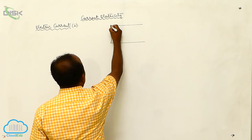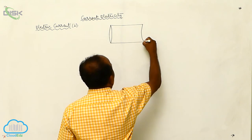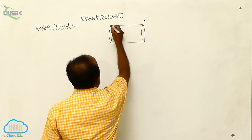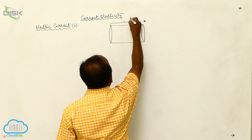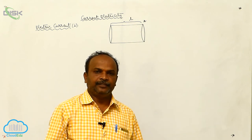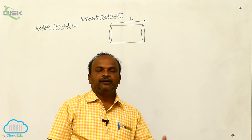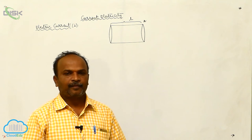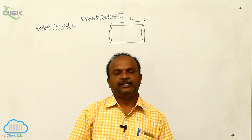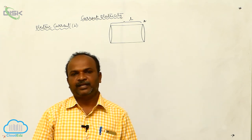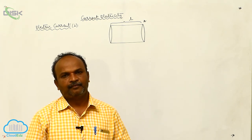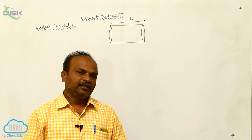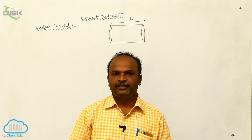Now let us consider a conductor of cross-sectional area A and length L. According to the passage of current, all solids are divided into three categories: conductors, insulators, and semiconductors. The substance which allows the passage of current is called a conductor. The substance which does not allow the passage of current is called an insulator. The substance which allows the passage of current partially is called a semiconductor.